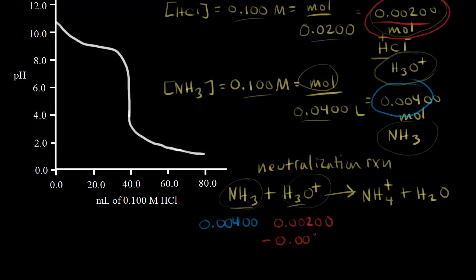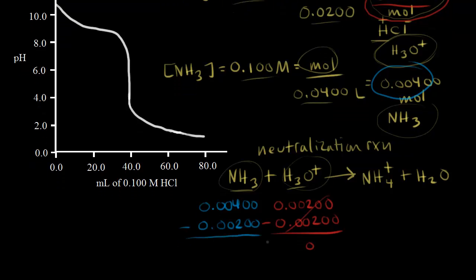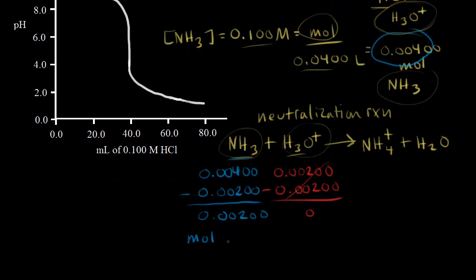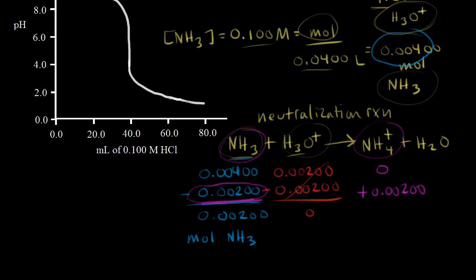After the neutralization: we're left with 0.004 minus 0.002 equals 0.002 moles of ammonia. Half the base has reacted with the acid and half is left over. Since we lost that many moles of ammonia and ammonia turns into NH4+, starting from 0 moles of NH4+, we gain 0.002 moles of ammonium. So we end up with 0.002 moles of NH4+.